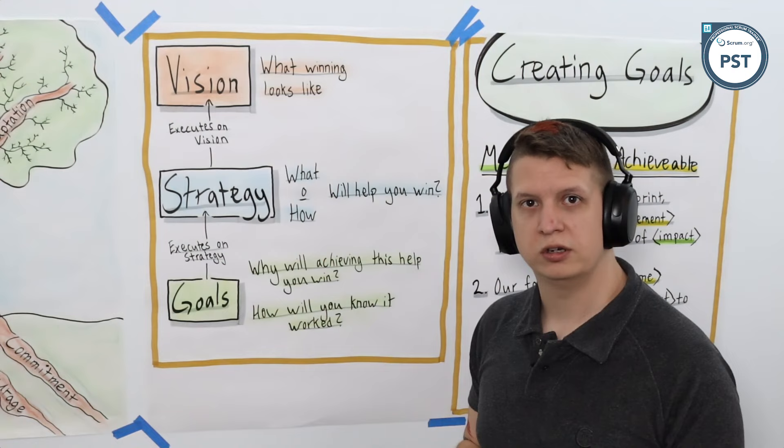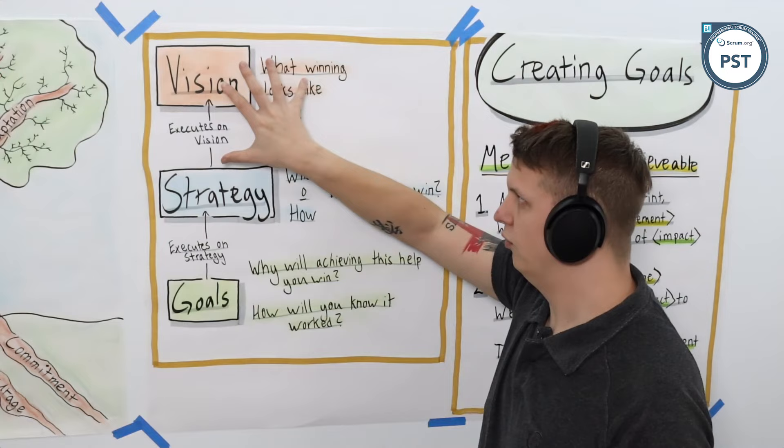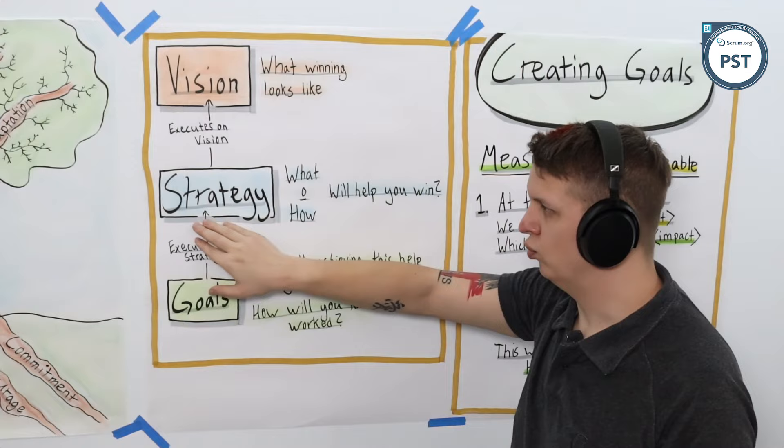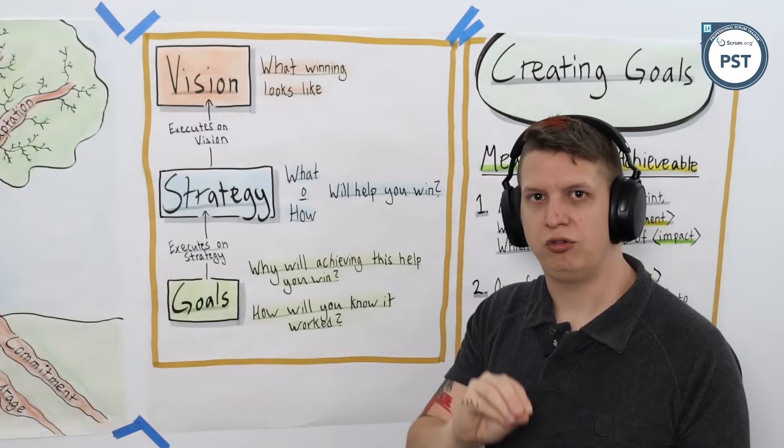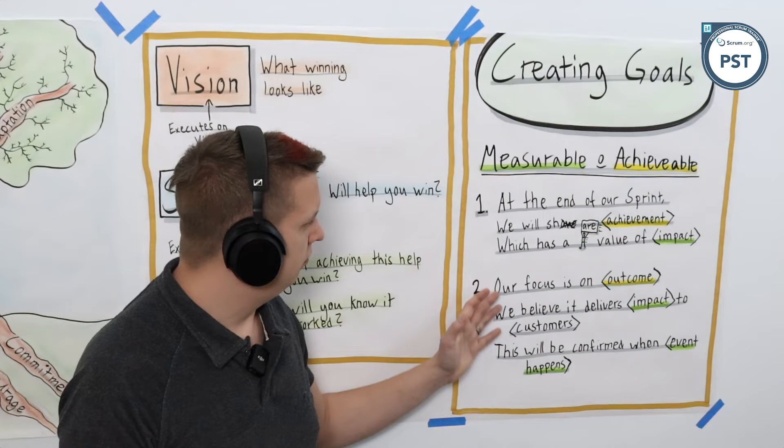And how will we know that it worked? Goals have to be achievable and measurable. So with this mindset in place, we're working towards a longer term future vision, the strategy is what is going to enable us to do that, and the goals are the more practical executable elements that are parts of the strategy. Creating goals, as already mentioned, they should be measurable and achievable.